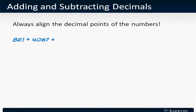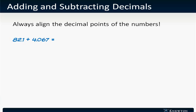Let's take a look at an example. We see in this example that 82.1 has one digit to the right of the decimal point, while 4.067 has three digits to the right of the decimal point. When we line up the decimal points, we see that 4.067 has two digits, the 6 and the 7, extending out to the right beyond the end of 82.1.